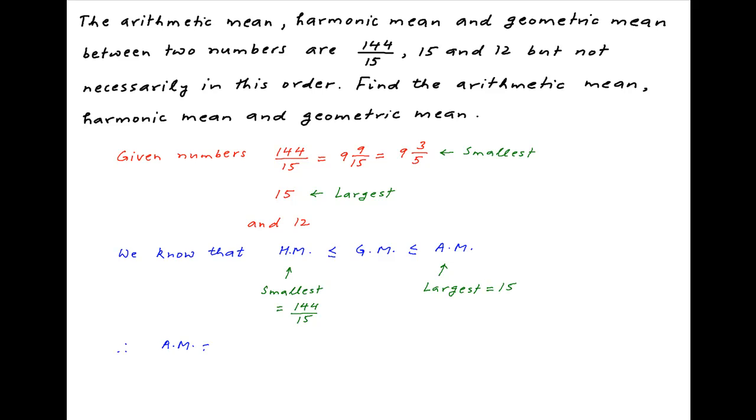Therefore, the arithmetic mean is equal to 15, the harmonic mean is equal to 144 divided by 15, and therefore it follows that the third number, 12, must be the geometric mean, which is the required answer.